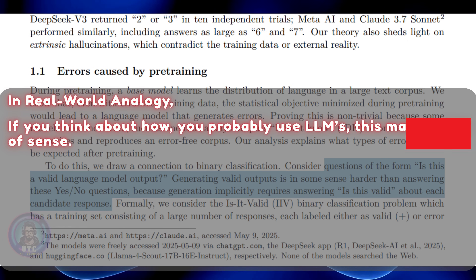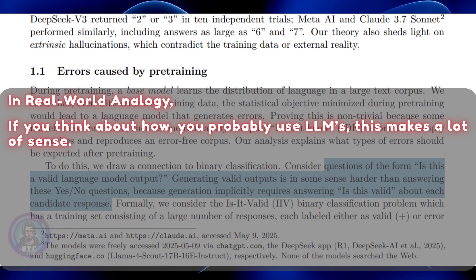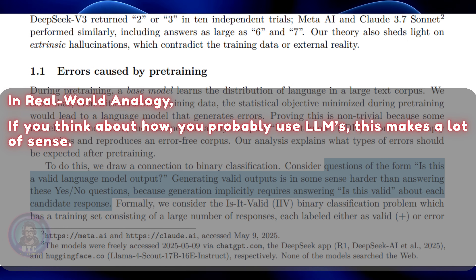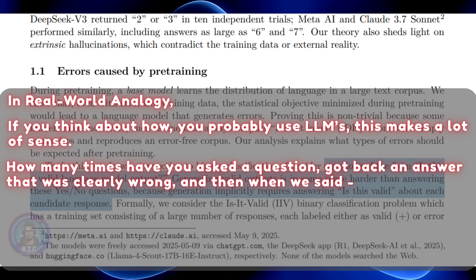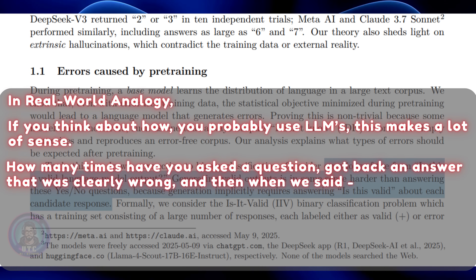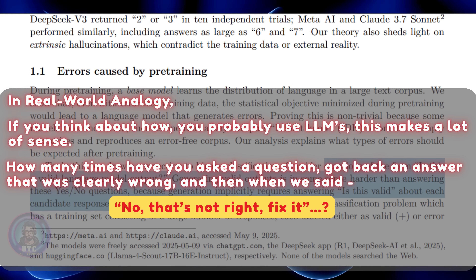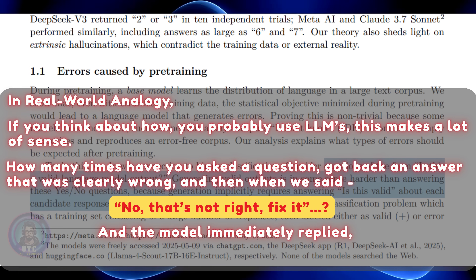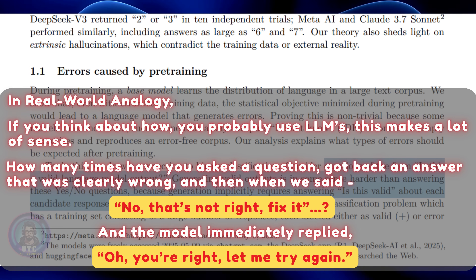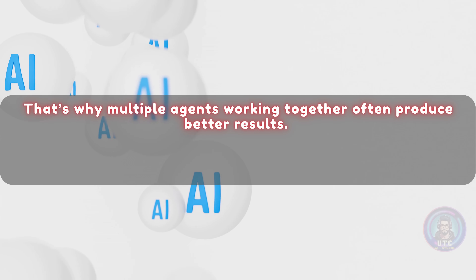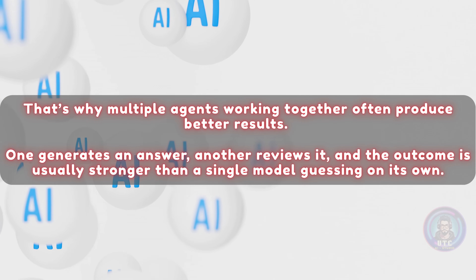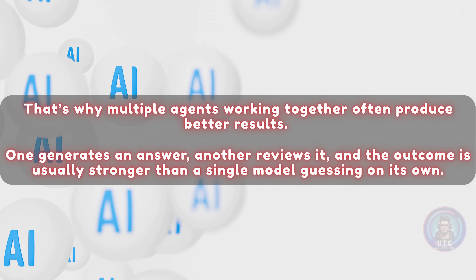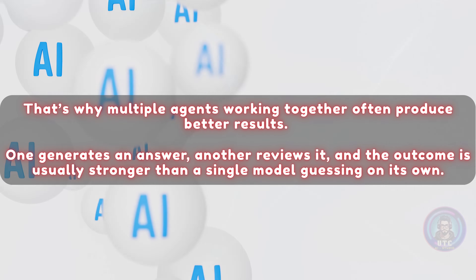In a real-world analogy, if you think about how you probably use LLMs, this makes a lot of sense. How many times have you asked a question, got back an answer that was clearly wrong, and then when you said 'no, that's not right, fix it' — the model immediately replied 'oh, you're right, let me try again.' That's why multiple agents working together often produce better results. One generates an answer, another reviews it, and the outcome is usually stronger than a single model guessing on its own.